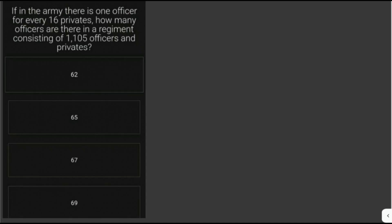If in the army there is one officer for every 16 privates, how many officers are there in a regiment consisting of 1,105 officers and privates? So in each group or squad, say one group, there's one officer and 16 privates.